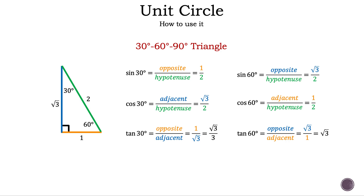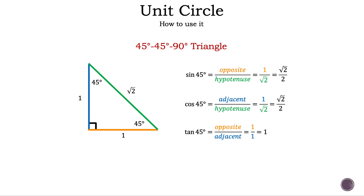Another special triangle is the 45-45-90 right triangle, where sine of 45 degrees is the square root of 2 over 2, cosine of 45 degrees is the square root of 2 over 2, and tangent of 45 degrees is 1.